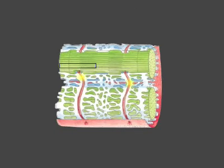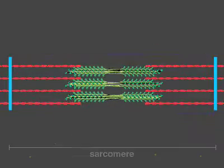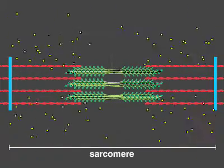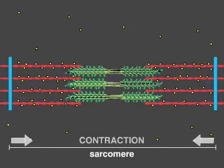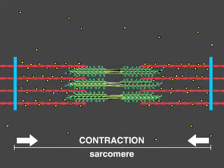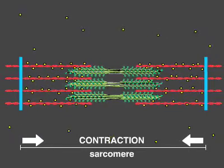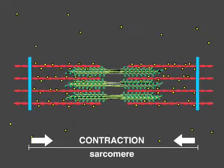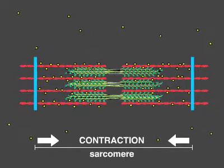Within a contractile bundle of a muscle cell, called a myofibril, the calcium interacts with protein filaments to trigger contraction. In each contracting unit, or sarcomere, thin actin and thick myosin filaments are juxtaposed but cannot interact in the absence of calcium.